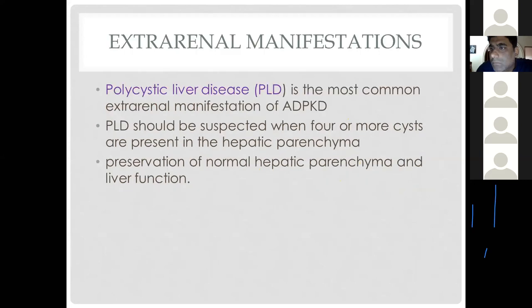Extra-renal manifestations of ADPKD include polycystic liver disease, in which cysts in the liver lead to distortion of the hepatic parenchyma, ultimately causing hepatic fibrosis and chronic liver disease.